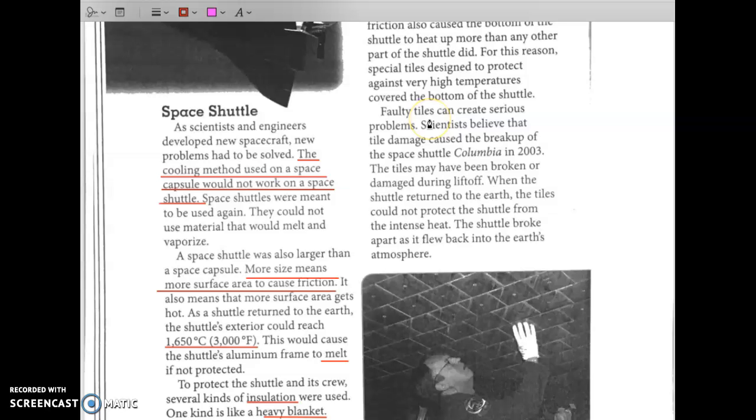Faulty or flawed tiles can create serious problems. Scientists believe that tile damage caused the breakup of the space shuttle Columbia in 2003, which we will watch a little bit about. The tiles may have been broken or damaged during liftoff. When the shuttle returned to the earth, the tiles could not protect the shuttle from the intense heat. The shuttle broke apart as it flew back into the earth's atmosphere. So paraphrase for me, tell me in your own words how or what happened to the space shuttle Columbia that caused it to break up. Yes, damaged tiles. Great.